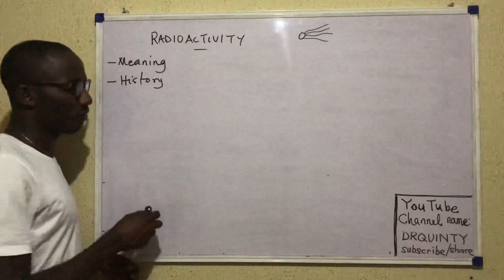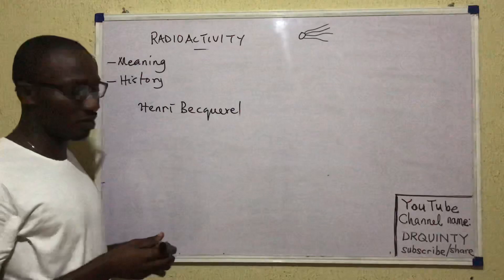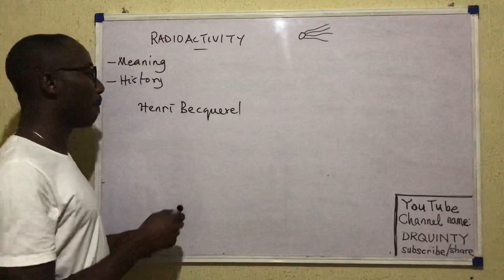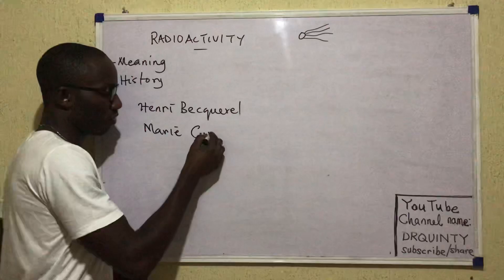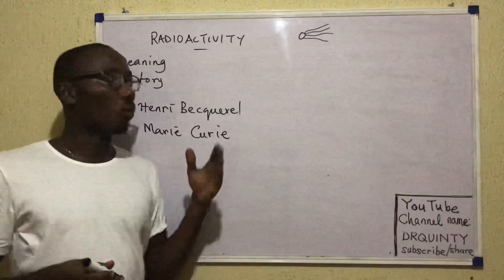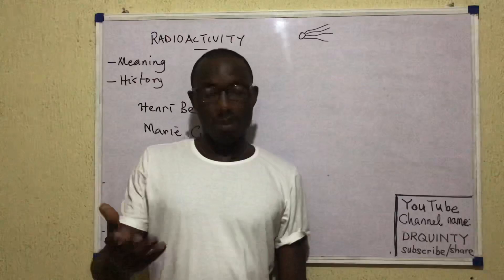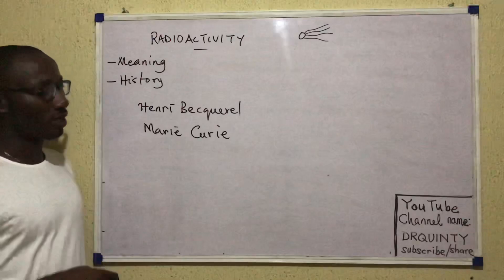A very brief history of radioactivity must include the name Henri Becquerel. Becquerel is generally regarded as the father of radioactivity in that he discovered radioactivity by accident. At the time of his discovery, he had with him a student, Marie Curie. Curie was the student of Becquerel and she carried on the work upon his demise, isolating a few elements and winning the Nobel Prize — in fact, she has two Nobel Prizes.